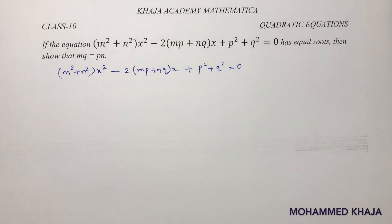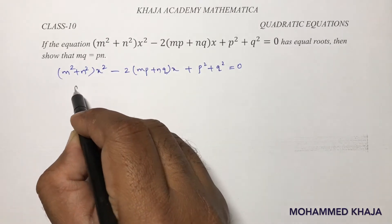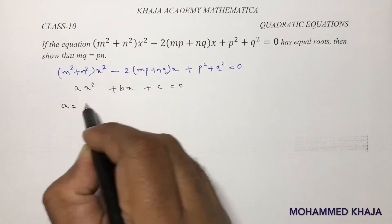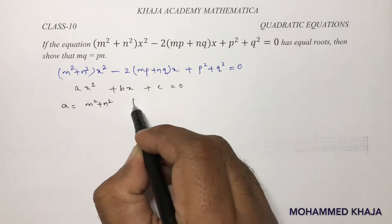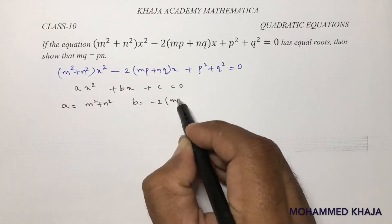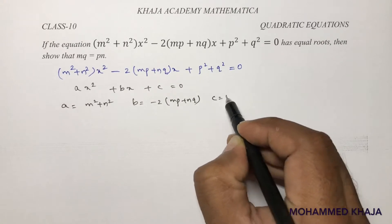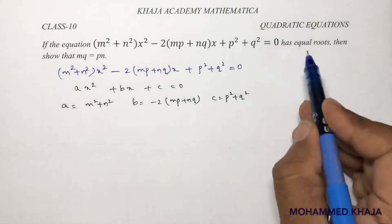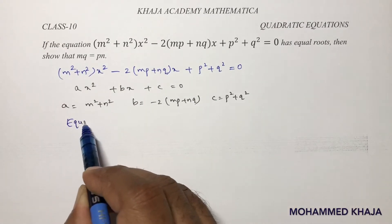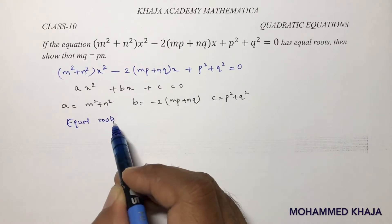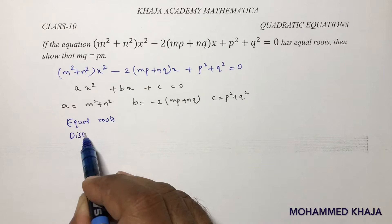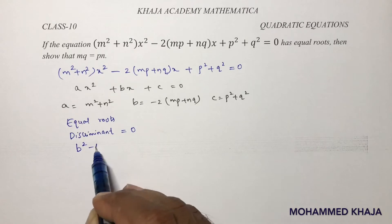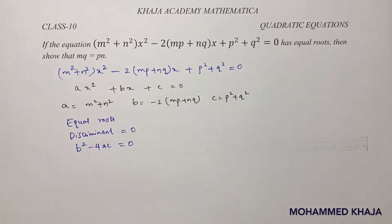Since the roots are equal, the discriminant is 0. Comparing with the standard equation ax² + bx + c = 0, the values are: a = m² + n², b = −2(mp + n³), and c = p² + q². So discriminant b² − 4ac = 0.